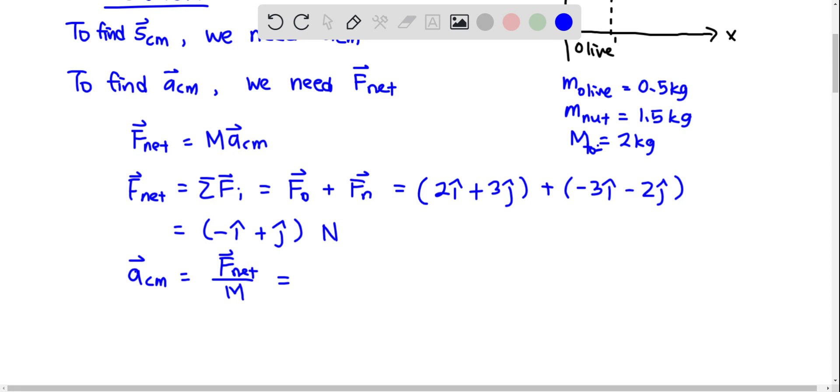So this will be half times minus i hat plus j hat meters per second squared.